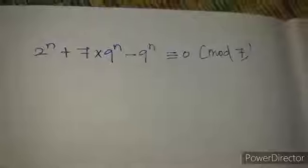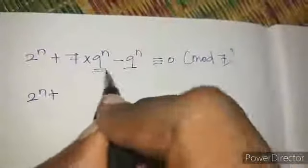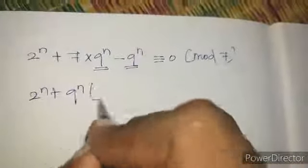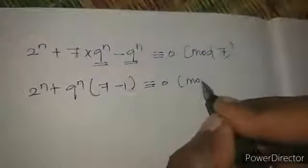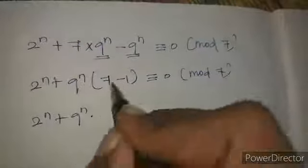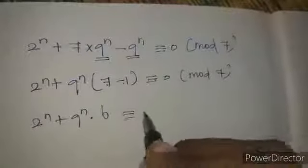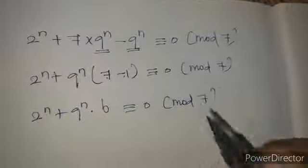So 2^n plus 7·9^n minus 9^n is congruent to 0 mod 7. Factoring out 9^n from the last two terms, we write 9^n into (7 minus 1), giving 2^n plus 9^n·(7 minus 1) is congruent to 0 mod 7.